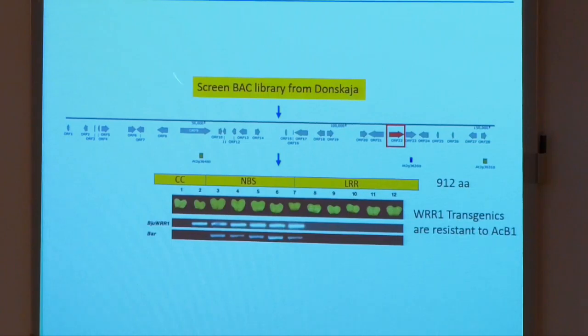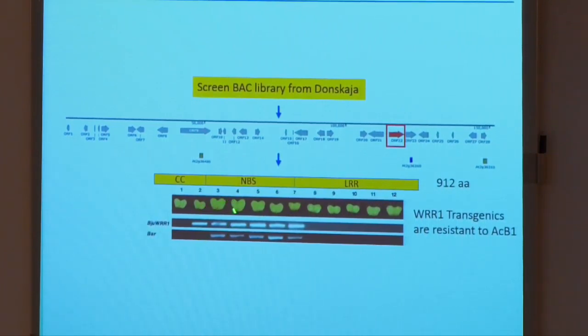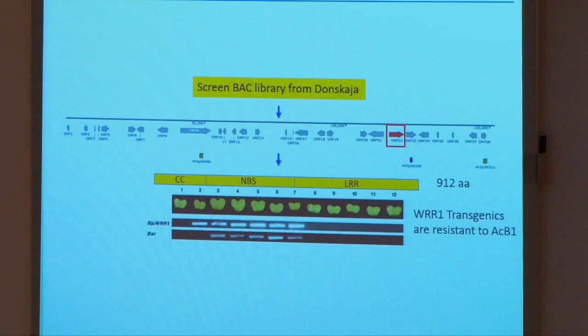This codes for a receptor which belongs to the NBS-LRR class of receptors — a very common class present across all plant species. This NBS belongs to a class which has a CC or coiled-coil domain at the N-terminal. When this cloned gene, which encodes 912 amino acids, was introduced into the susceptible Indian germplasm Varuna, wherever the gene was present resistance was conferred, and wherever the gene was missing there was susceptibility. This was proof of functional validation that this receptor is responsible for imparting resistance.